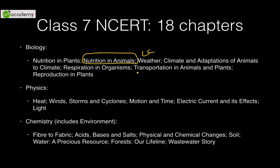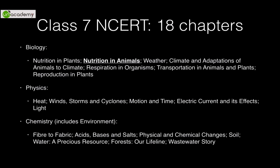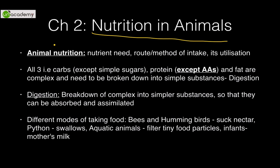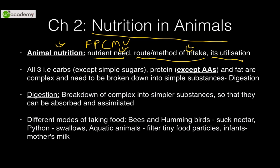Nutrition in animals — you can see here the 18 chapters present in class 7 NCERT; we will be covering 'Nutrition in Animals.' Nutrition means nutrients needed — that is fat, proteins, carbohydrates, minerals and vitamins — and the method of intake, as there are innumerable methods of intake. Biology is the most interesting science ever. Then there is utilization — how it is utilized ultimately. All three major nutrients — carbohydrates, proteins and fat — are complex in general.